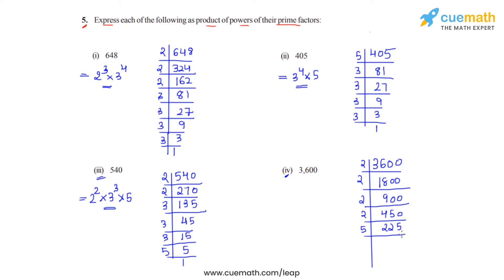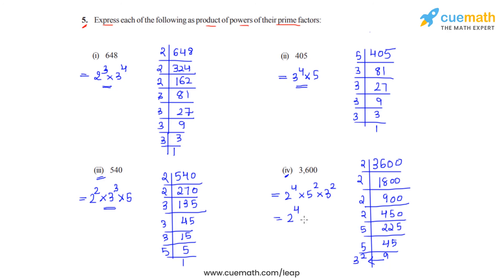So dividing 225 by 5 gives us 45. 5 can divide 45 so we will get the answer as 9, and 9 can be written as 3 squared. So 3600 can be written as 2 raised to 4 times 5 raised to 2 times 3 raised to 2, or if we arrange it properly: 2 raised to 4 times 3 raised to 2 times 5 raised to 2.